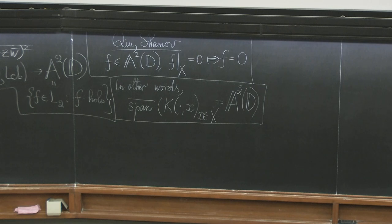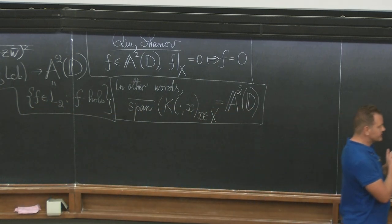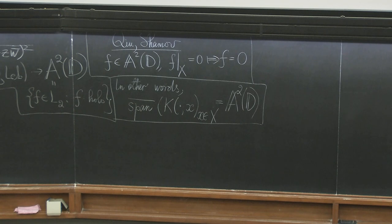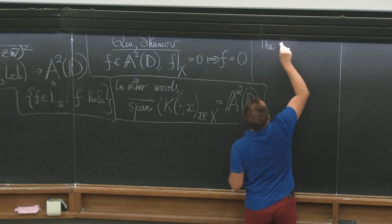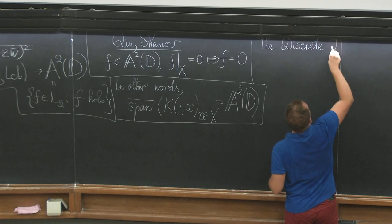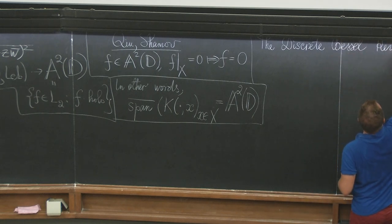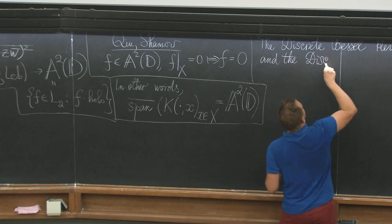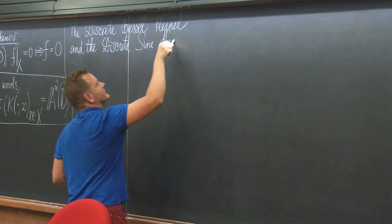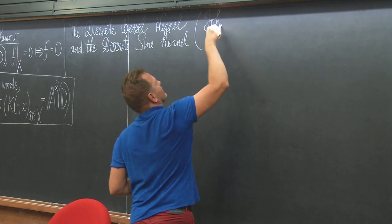Now let me consider the third example before passing to the general theory. I would like to consider the discrete Bessel kernel, which we heard about in the talk of Tomohiro Sasamoto, and the discrete sine kernel — I would like to consider them in the way in which they actually appeared. So: the discrete Bessel kernel and the discrete sine kernel.